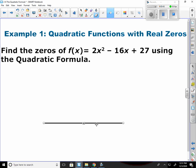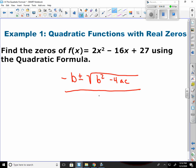Okay, let's see how we can use the quadratic formula. So our first example, quadratic functions with real zeros. Find the zeros of this using the quadratic formula. I'm going to go ahead and write it down again. It's negative b plus or minus the square root of b squared minus 4ac all over 2a.